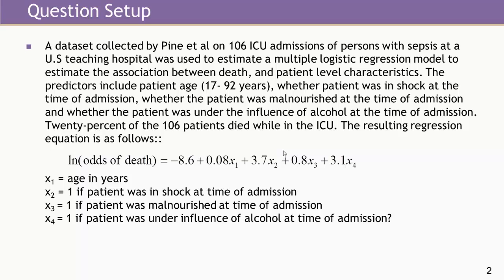This review session dealt with a dataset that was a real dataset based on 106 ICU admissions of persons who had sepsis at the time of admission. This is at a single US teaching hospital and was from a published paper that used multiple logistic regression to estimate the association between death in the ICU and patient-level characteristics — ostensibly, if certain things stood out as predictors of death, that would allow for better triage of patients in sepsis.